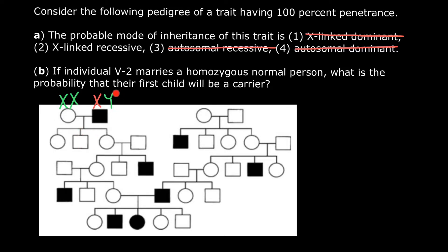Males get only a Y chromosome from the father's side. For example, this male got a Y chromosome from the father and a normal X chromosome from the mother. As for this female, she got the defective X chromosome from the father's side and a normal X chromosome from the mother's side. So if the father is affected, 100% of female progeny will be heterozygous — carriers of this X-linked recessive disorder.